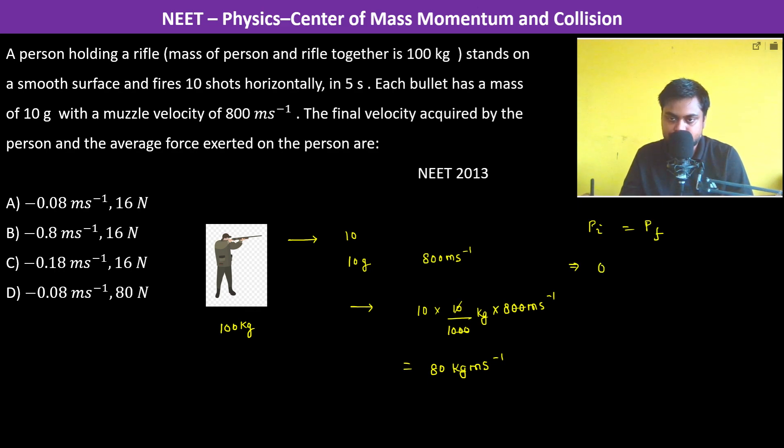Therefore zero. Final momentum is equal to 100 kg into velocity V plus 80 kg meter per second. Therefore V is equal to minus 80 kg meter per second divided by 100 kg.